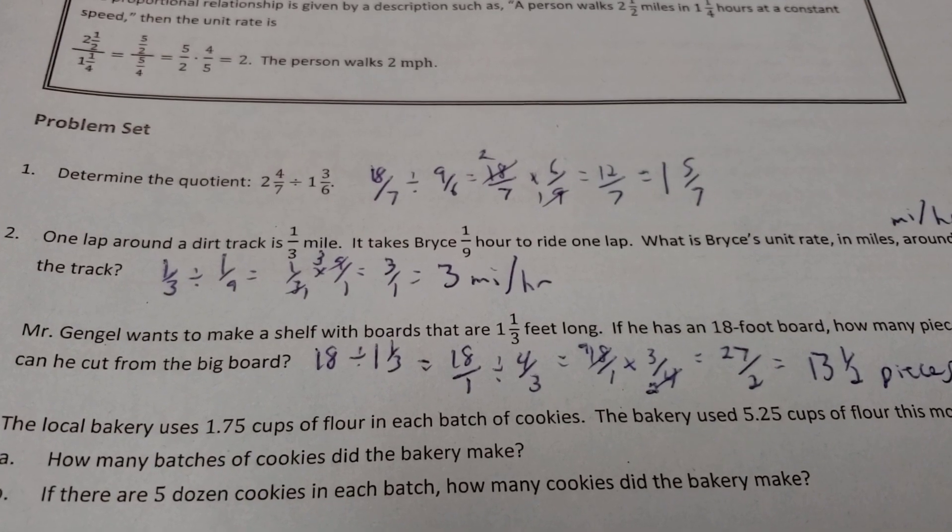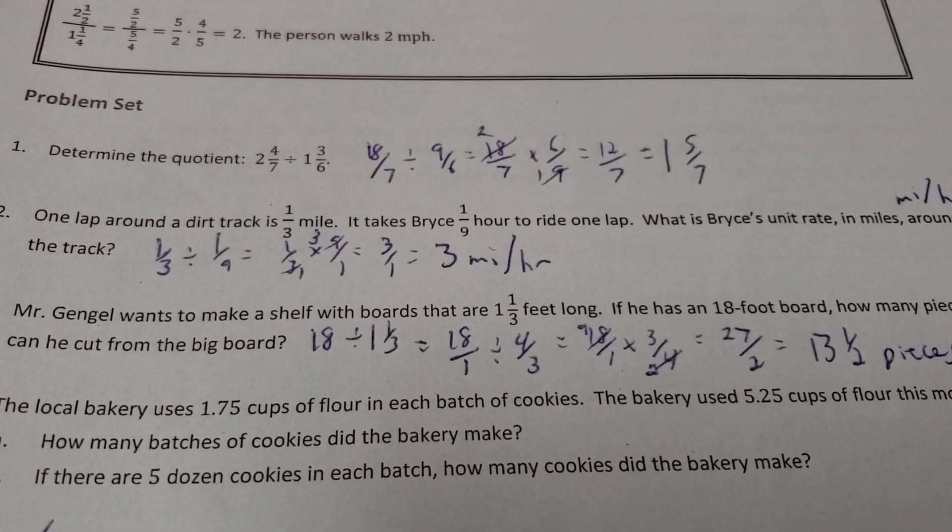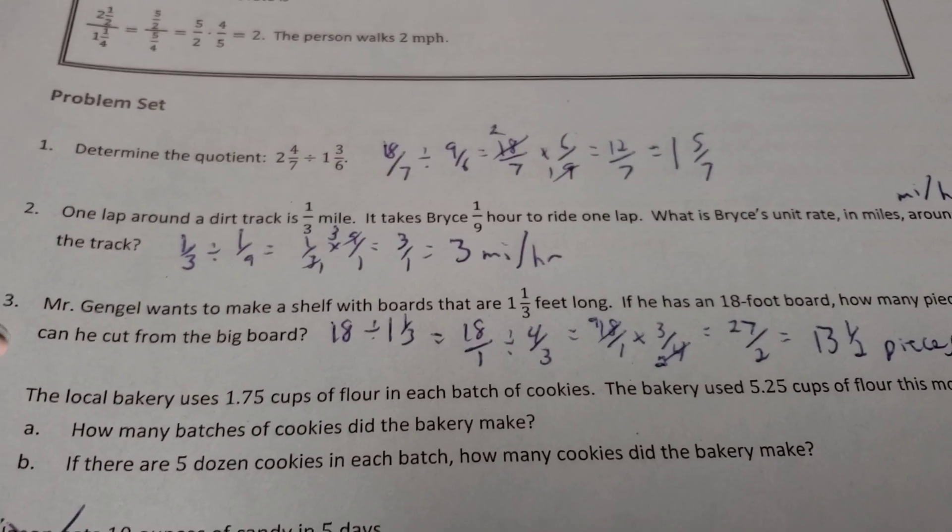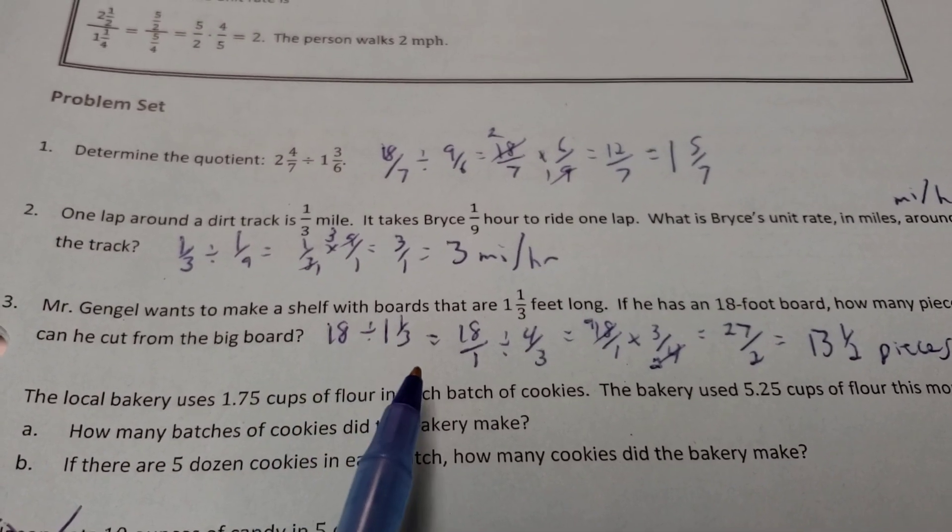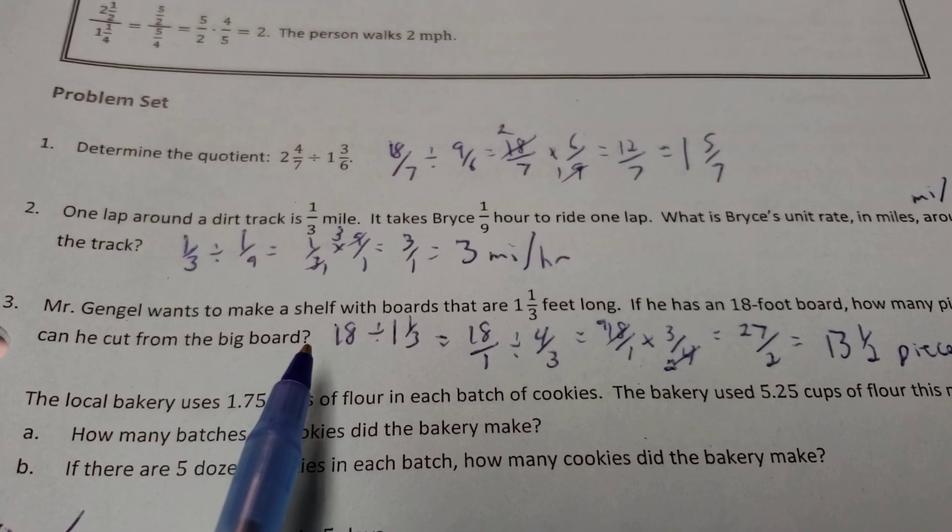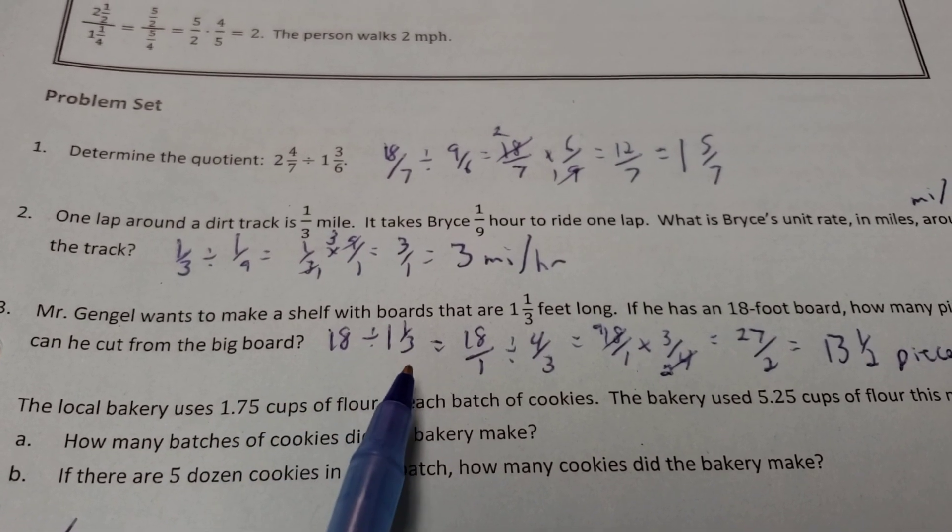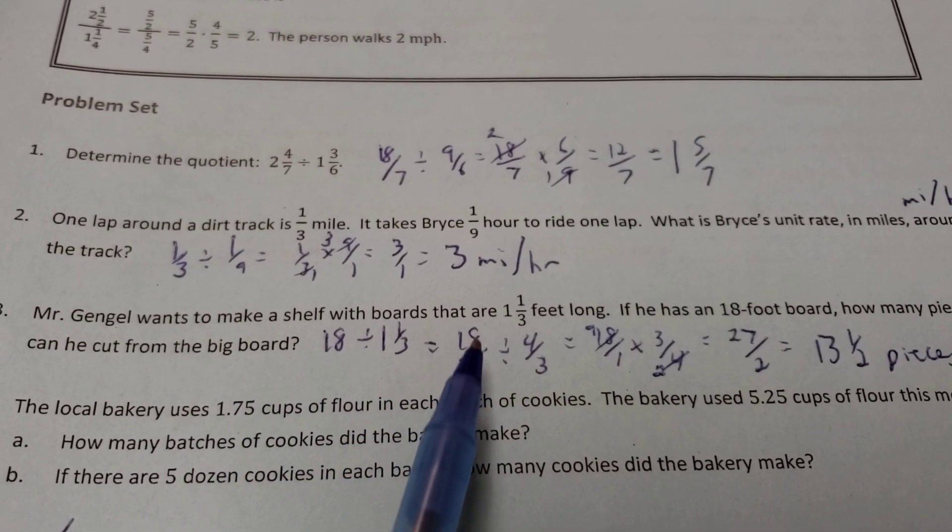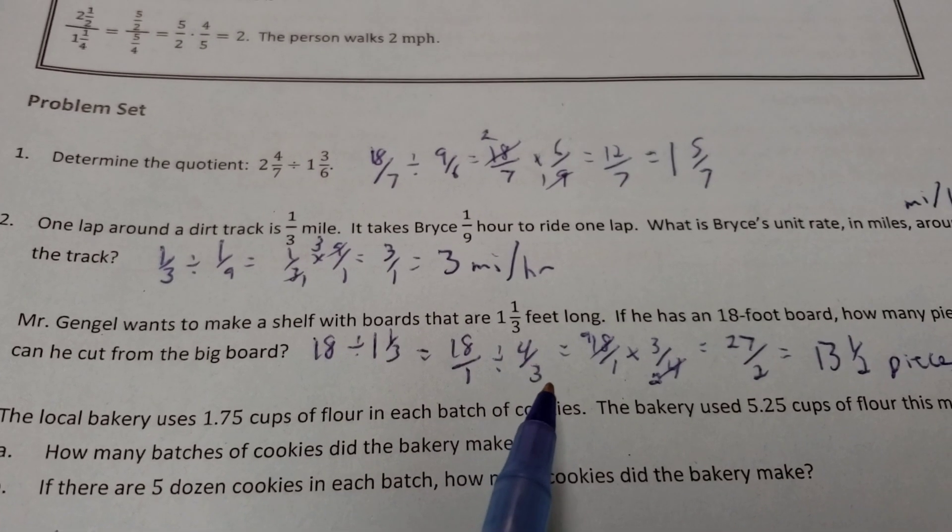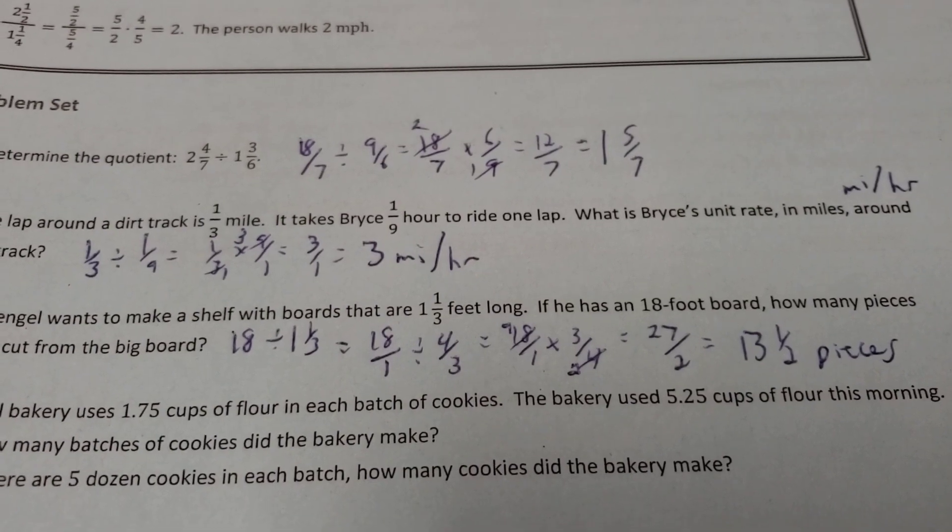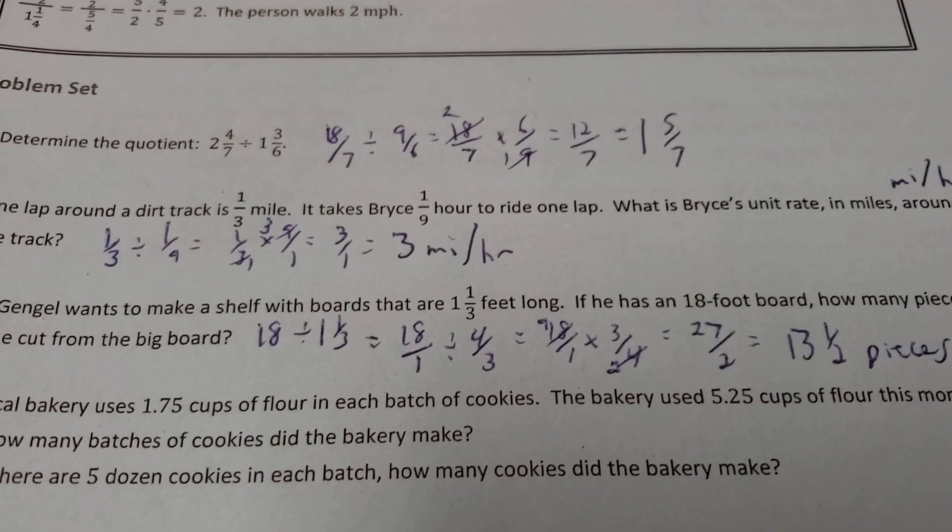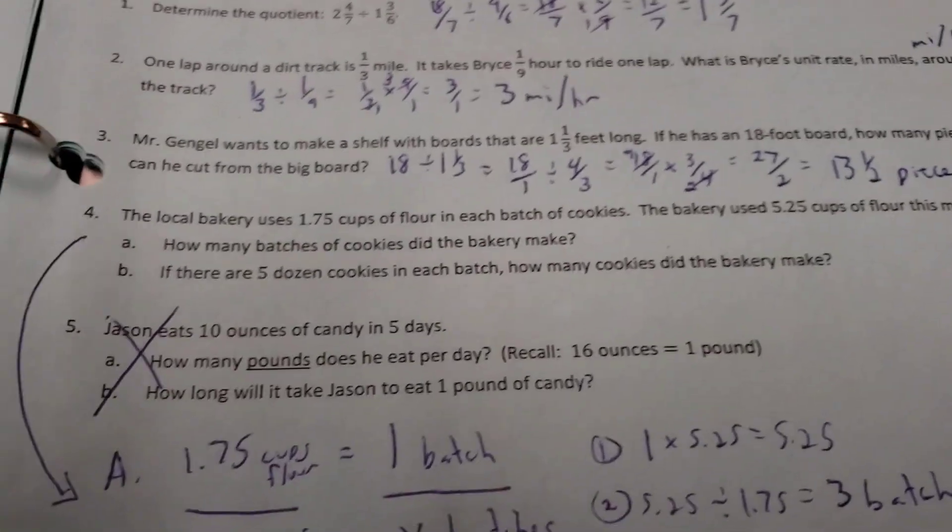Number 3. Mr. Gangle wants to make a shelf with boards that are 1 and 1/3 foot long. If he's got an 18 foot board, how many pieces can he cut from the big board? I put the board first, and then I'm going to split it up into pieces. So, that's why the 18 has to go first, because it's the full board being split up into pieces this size. So, put it over 1, convert the mixed number to an improper fraction, keep, change, flip, and we eventually get to 13 one-half pieces. Remember, all this division is something that should be familiar to you from a few weeks ago.